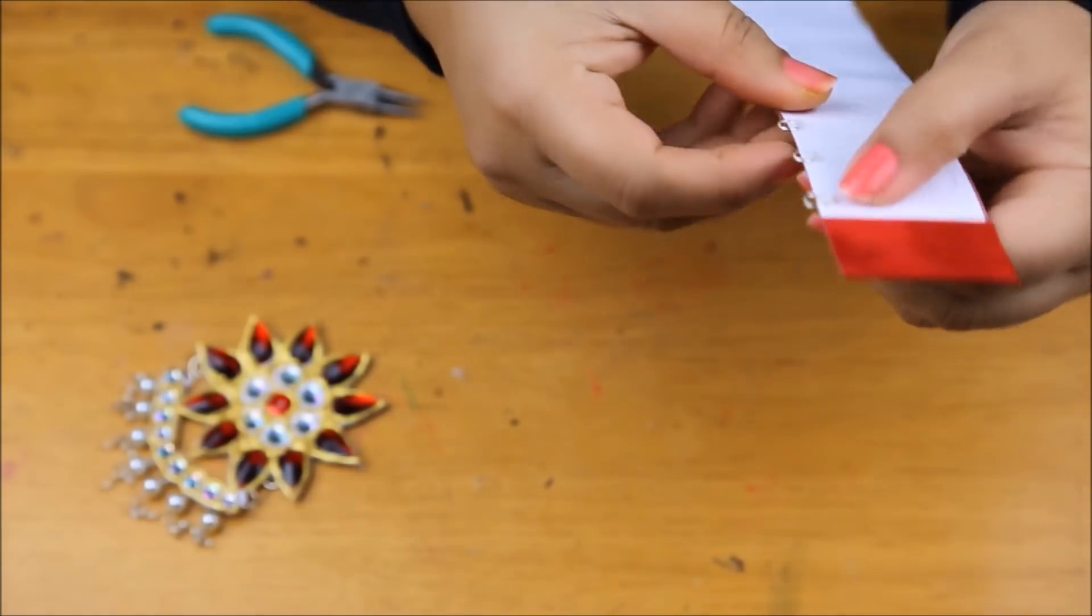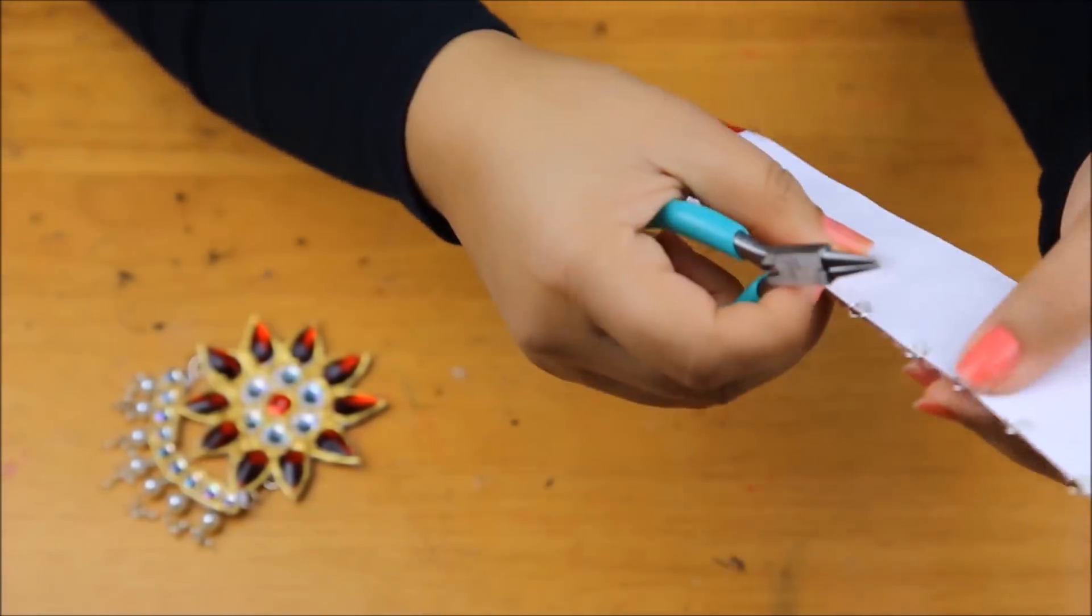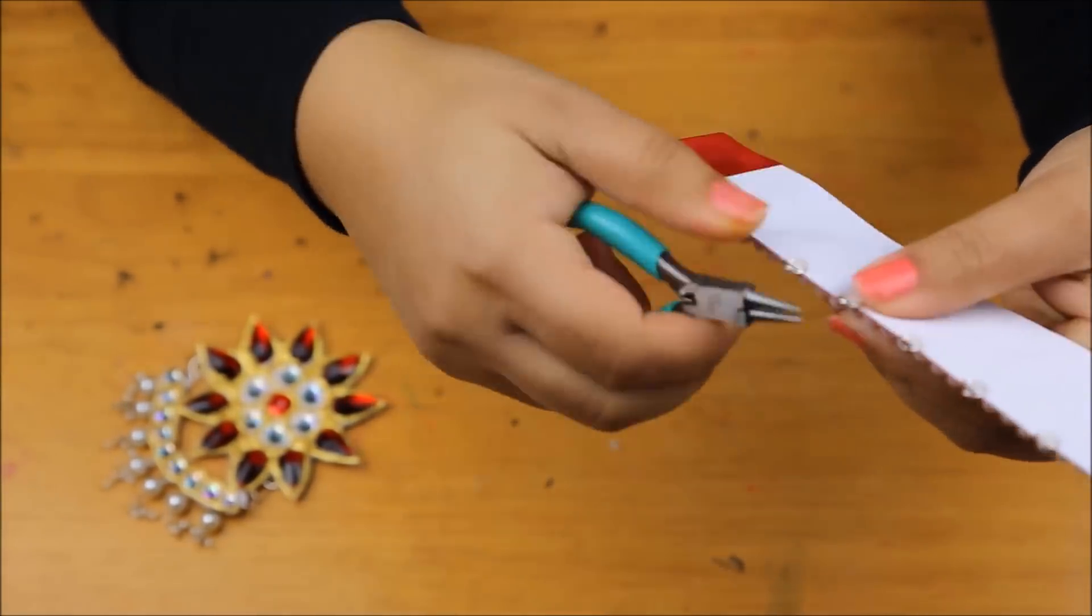Next, I'm going to attach everything together by opening up the jump rings in the body of the choker. First, I will attach the chain and then the pendants.